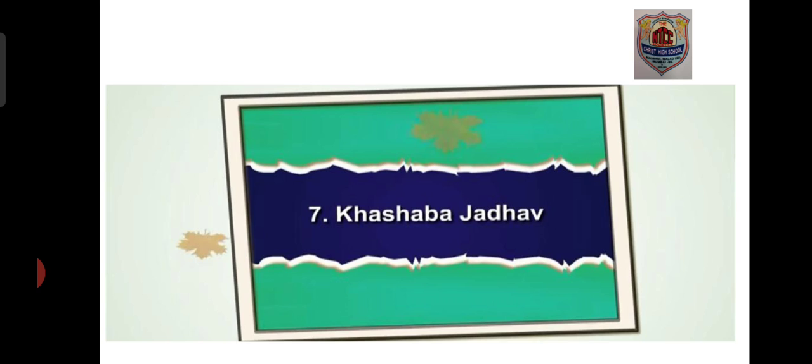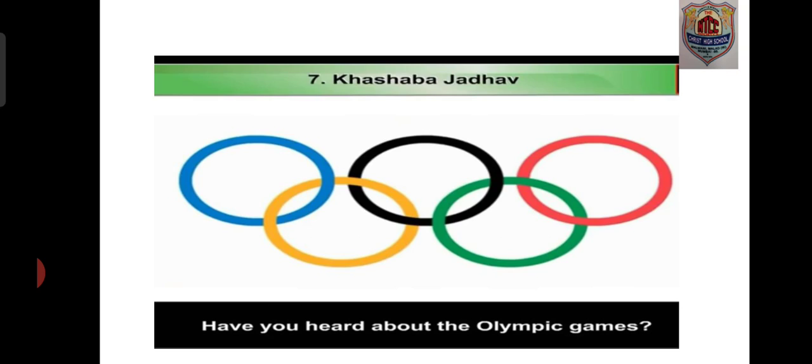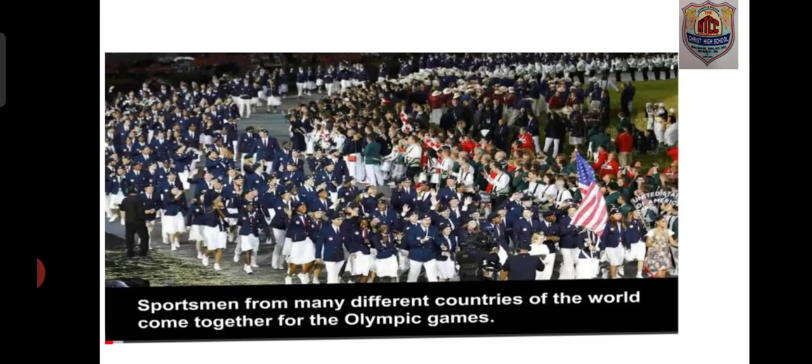The lesson we are going to do today is Lesson Number Seven: Kashaba Jadav, from a Bal Bharati textbook. This is going to be Part One. Here is a picture of Kashaba Jadav. You can see this symbol — it's like circles, there are five circles. The last time I asked you if you knew about the Olympic Games. This is the symbol of the Olympics, and you can see the colors: blue, black, red, yellow, and green.